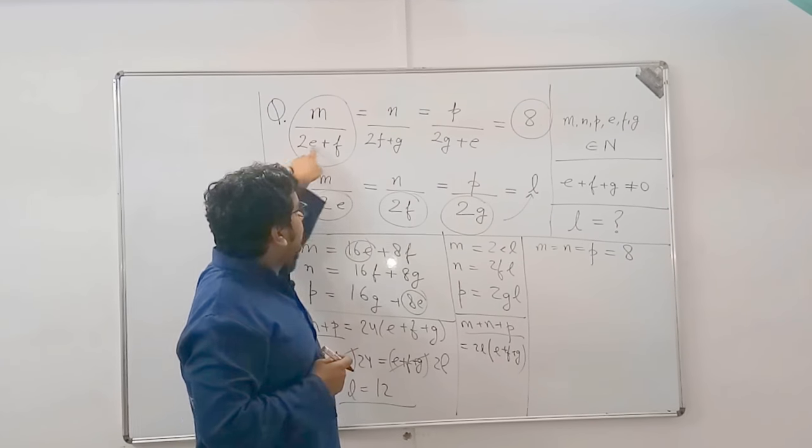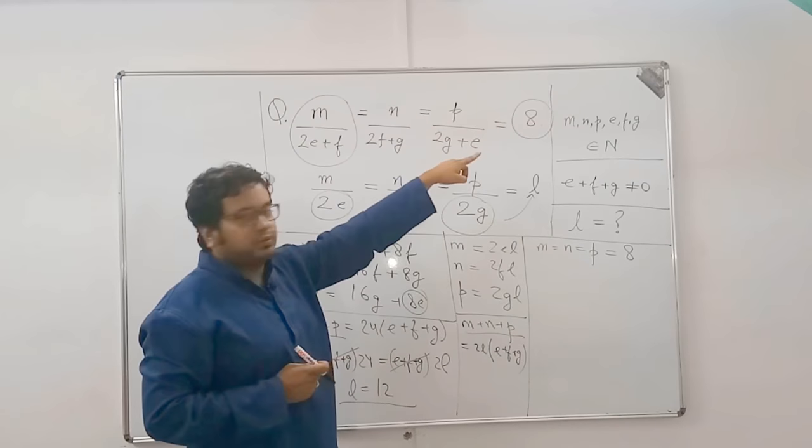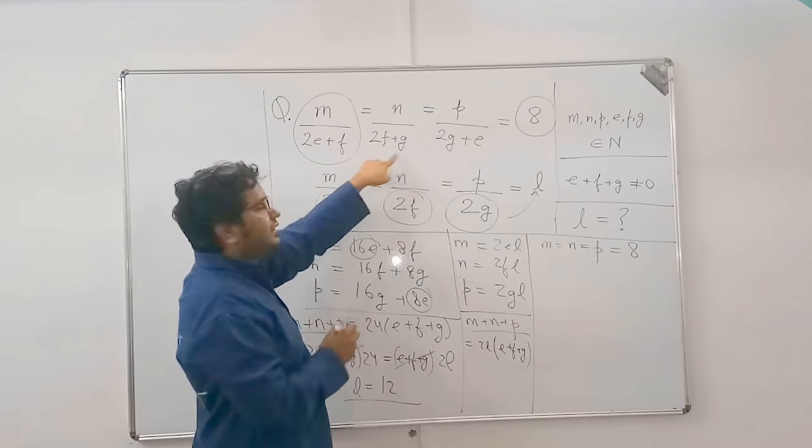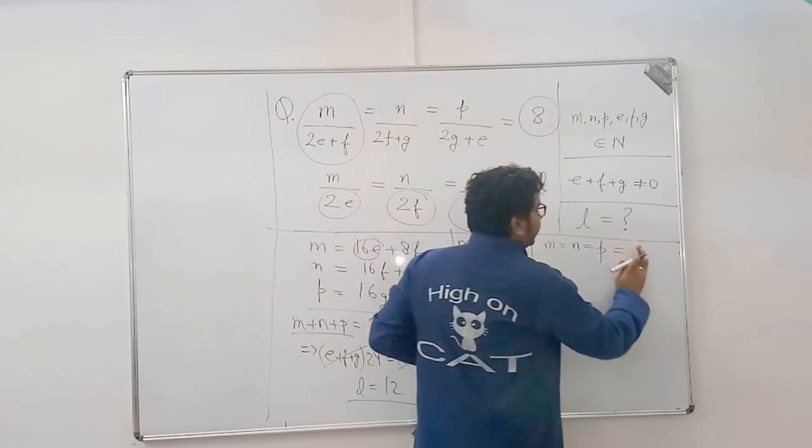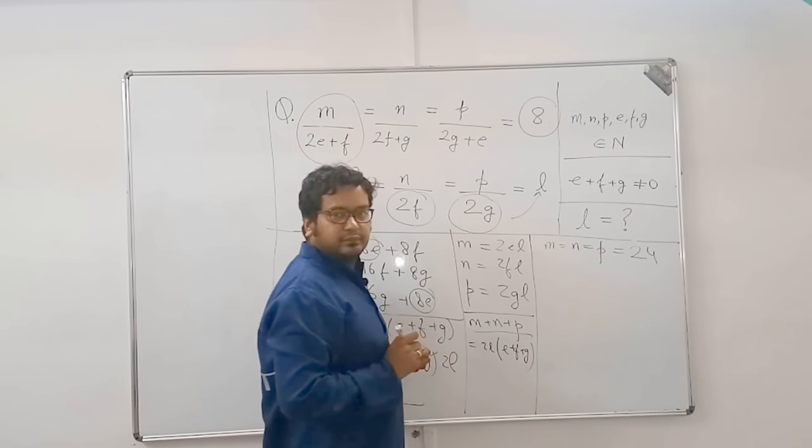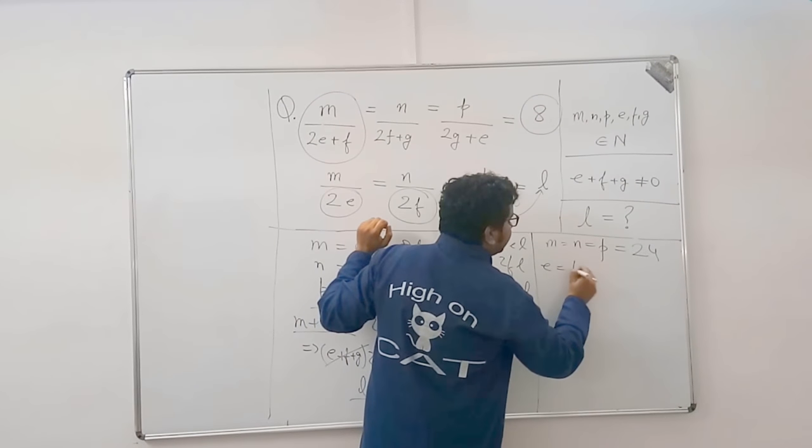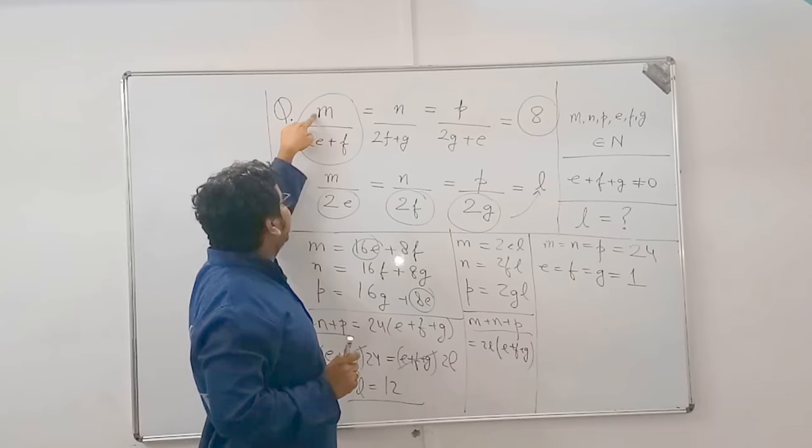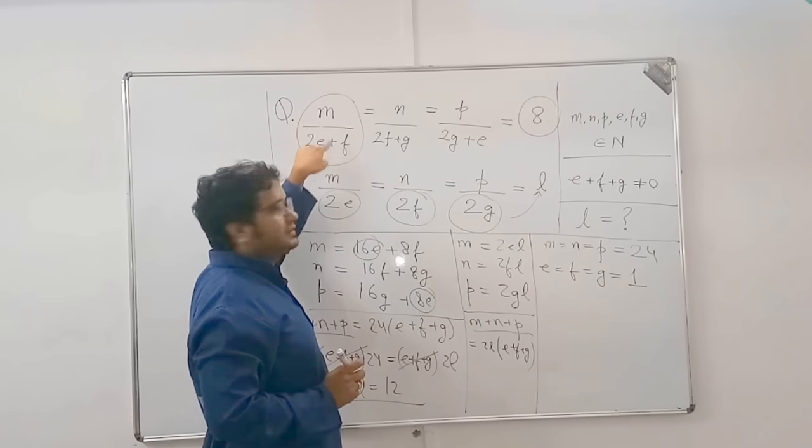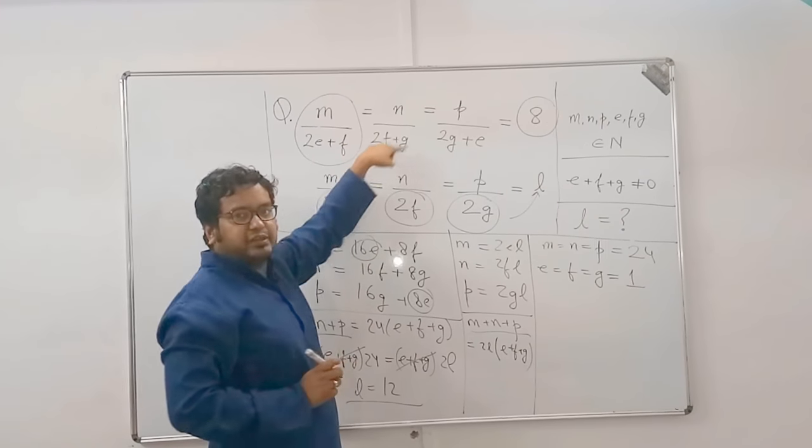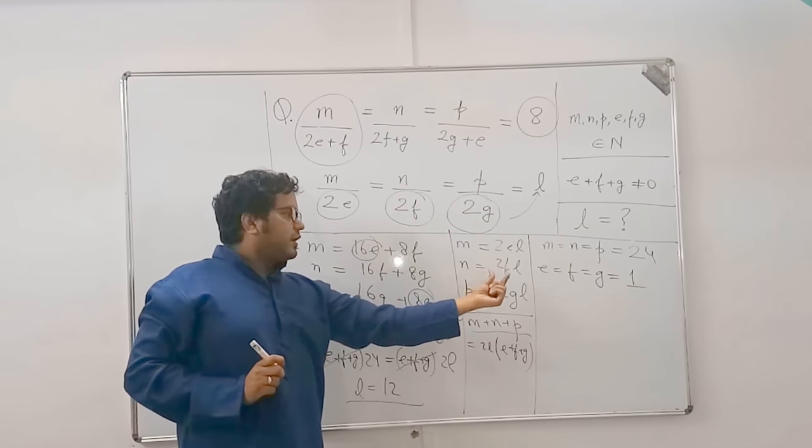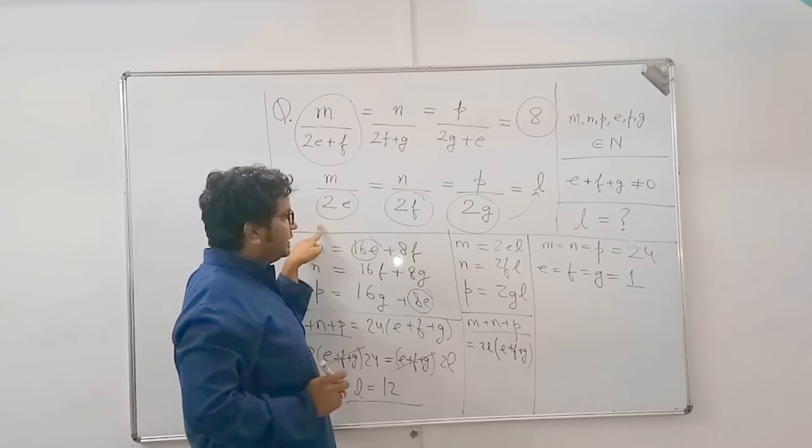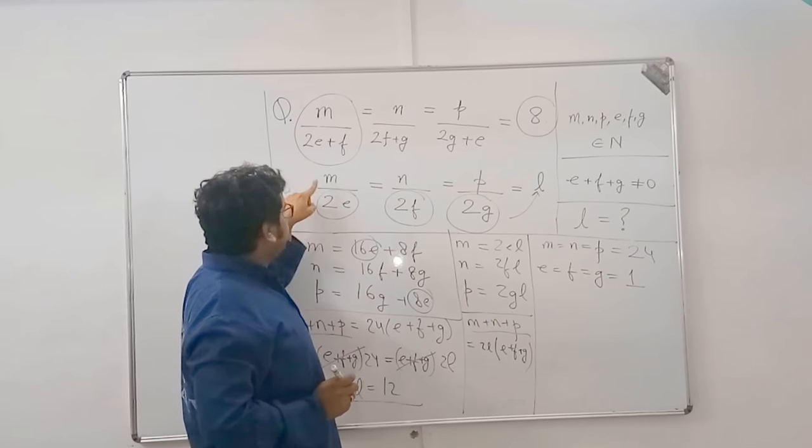Now, for all these three to be equal to 8, e and f being natural numbers, if I take the smallest value, 1, still these become 3. So, to get 8, minimum I need to take is 8 into 3, that's 24. And in that case, I'll have to take e, f, g as equal to 1. Now see, 24 divided by 2e, that is 2 plus 1, gives 3. 24 by 3 is how much? 8. 24 by 3, 8. 24 by 3, 8.